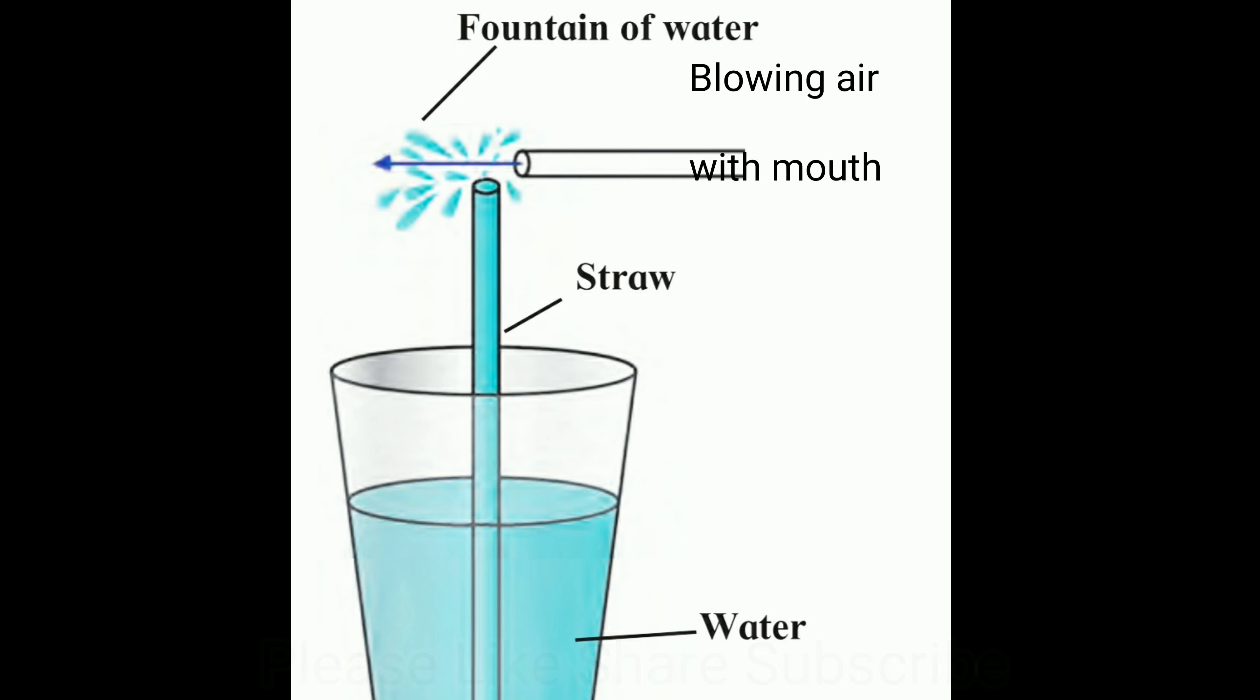On blowing through the straw, the air at its open end is pushed away, and hence the pressure of the air at the opening goes down. As the pressure of the air near the upper end of the erect straw becomes less than atmospheric pressure, the water in the cup is pushed from where the pressure is higher to where it is lower. That is, in the upward direction, and the water comes out in the form of a fountain. The more forcefully you blow, the higher will be the fountain.